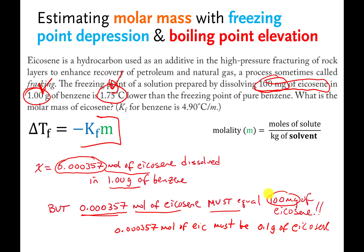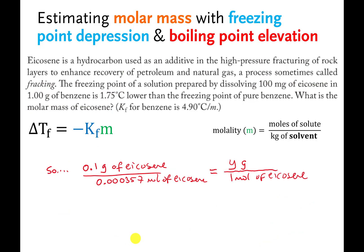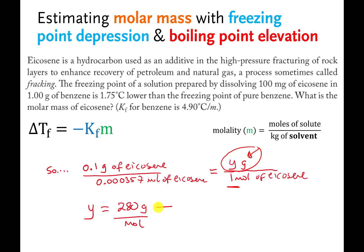So what that means is 0.000357 moles of icosine must be 0.1 grams of icosine, because 100 mg is the same thing as 0.1 grams. We're trying to figure out the molar mass of icosine, and molar mass is grams per mole — which we have now. We can set it up as two fractions equal to each other and figure out Y, which will tell us grams per mole. We cross multiply and divide, and we end up with the molar mass of icosine: 280 grams per mole. And if you look up icosine on the internet, probably on Wikipedia, you will find that the molar mass is actually pretty close to 280 grams per mole — so we did it correctly.